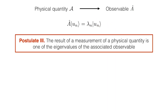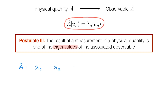As we know from the video on eigenvalues and eigenstates, postulate 3 of quantum mechanics tells us that the result of a measurement of a physical quantity is one of the eigenvalues of the associated observable. What this means is that when we want to measure property A, we first need to solve the corresponding eigenvalue equation, and this allows us to find all eigenvalues, which we can write as λ1, λ2, λ3, and so on.